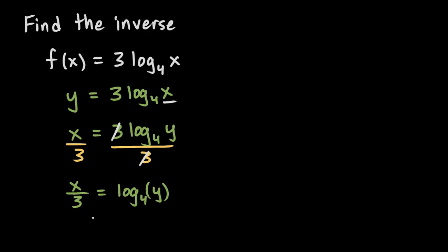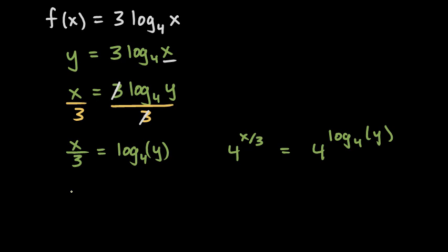So I'm going to do 4 to the left side and also 4 to the right side. This is 4 to the power of x over 3 on the left, and 4 to the power of log base 4 of y on the right. This base-4 exponent and the base-4 log cancel each other out, and that leaves us simply with y. So 4 to the power of log base 4 of y is just y.